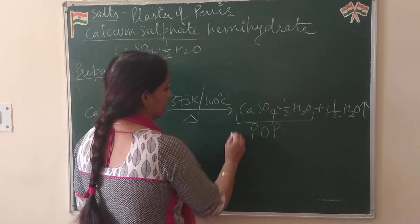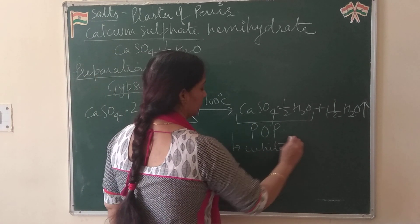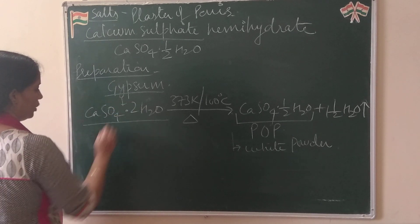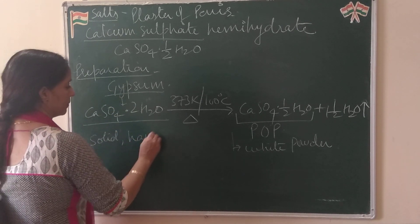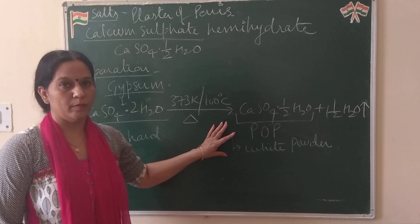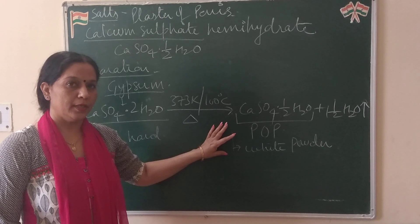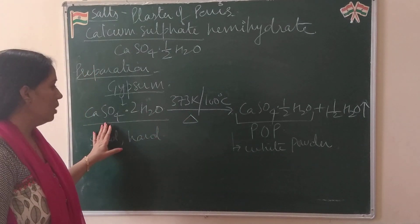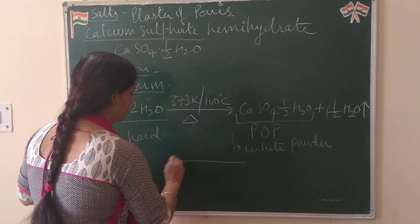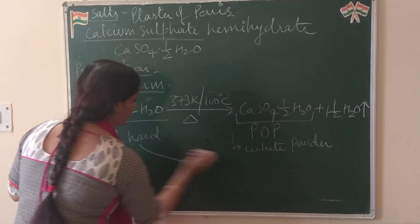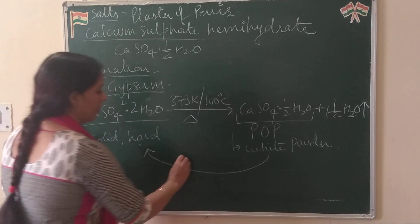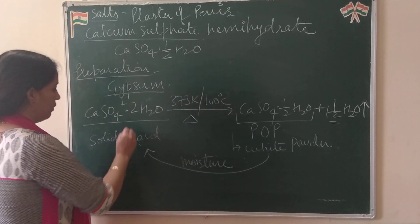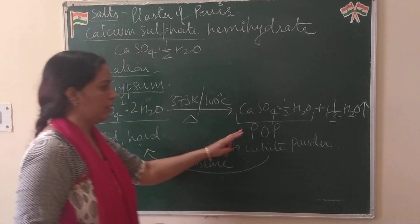What are the properties of plaster of Paris? It is a white powder, while gypsum is a solid and hard substance. Plaster of Paris is stored in moisture-proof containers. The reason is that if it is exposed to moisture, it will absorb moisture and turn back into hard gypsum — a reverse process. That is why it must be stored in moisture-proof containers.